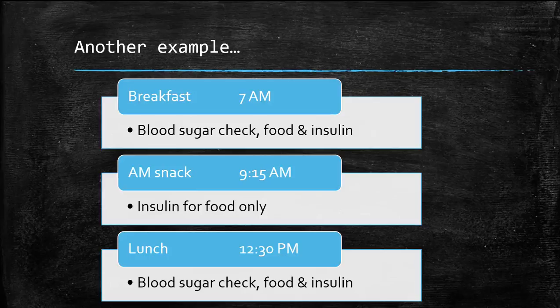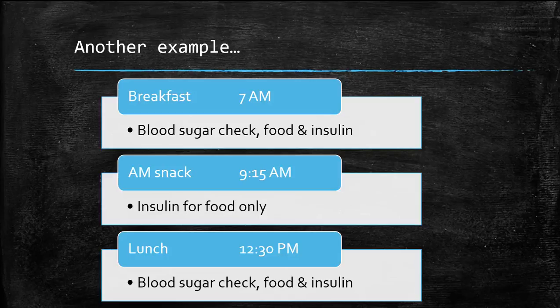School lunch is at 12:30. It has been 3 hours since you last ate, so you should check your blood sugar, give insulin to correct if needed, and give insulin to cover the carbs in your lunch.